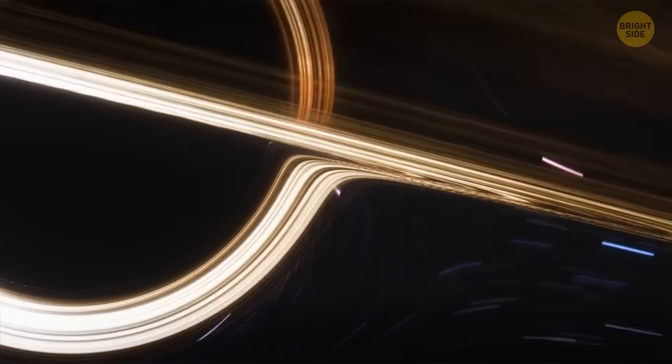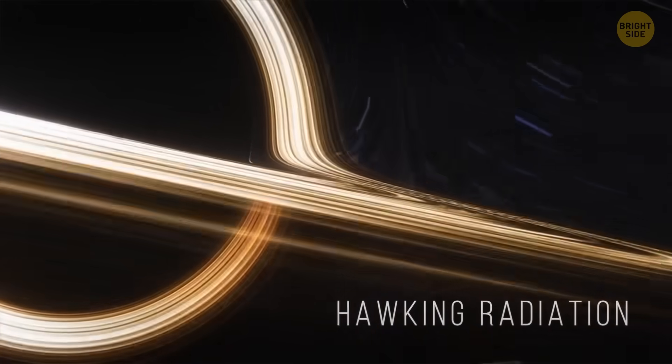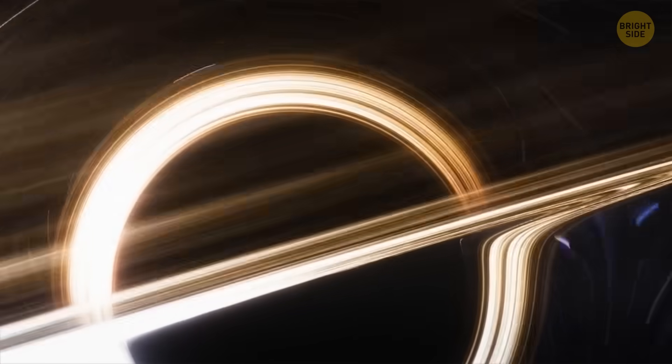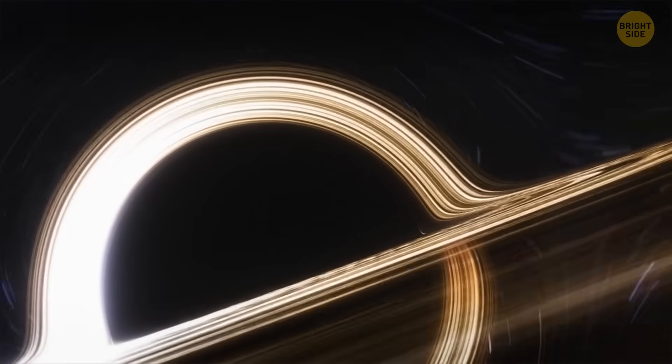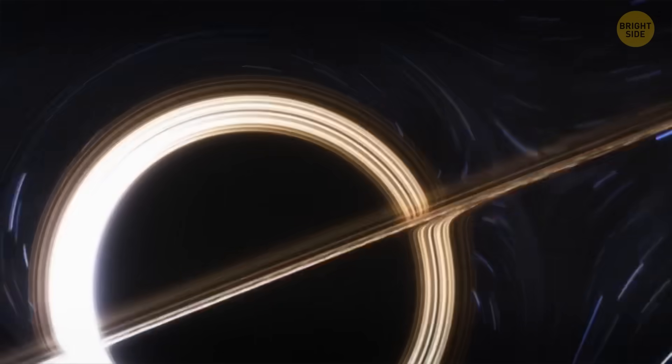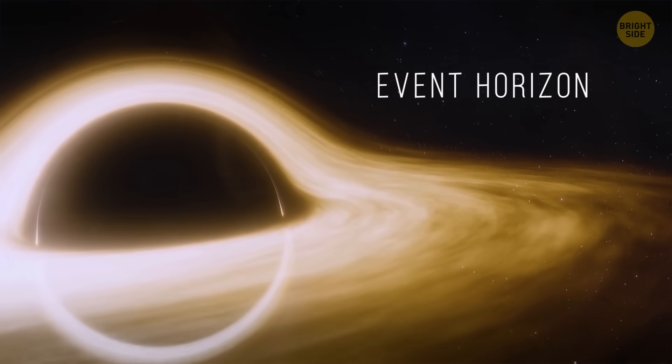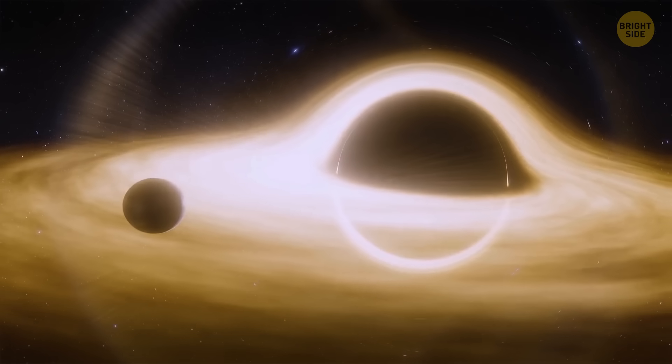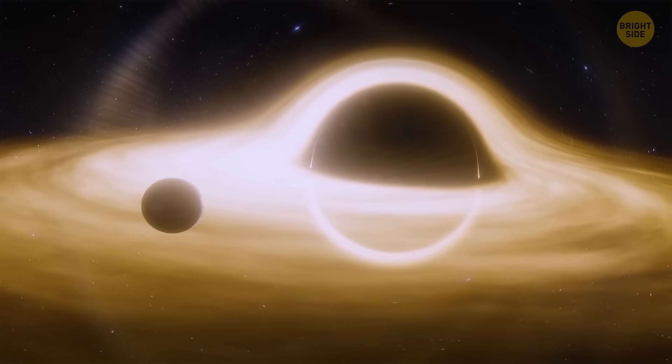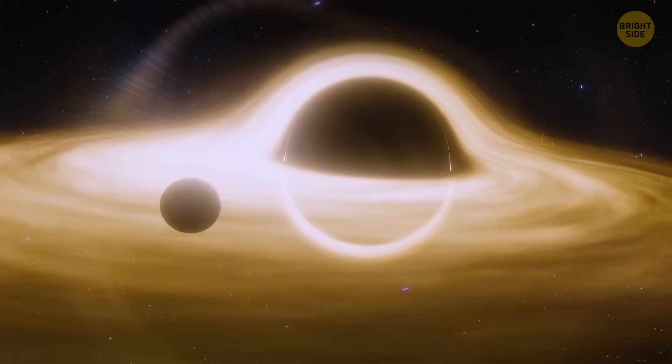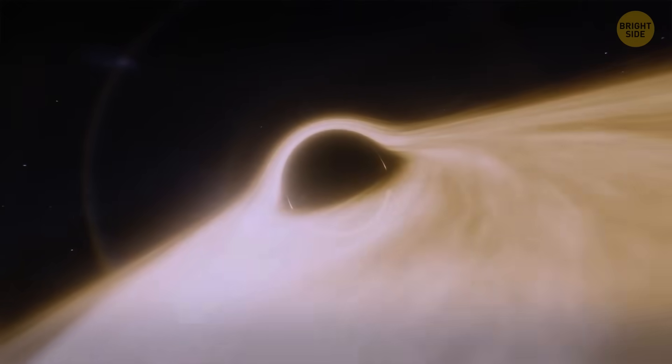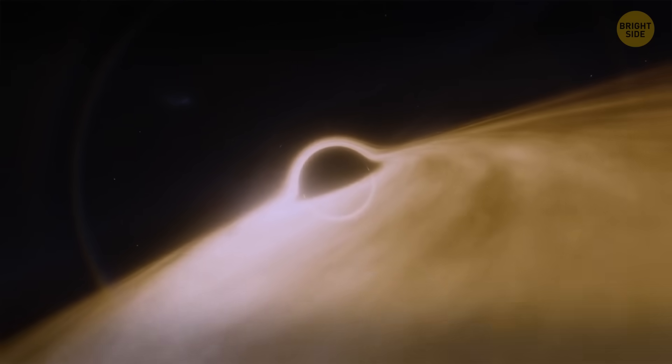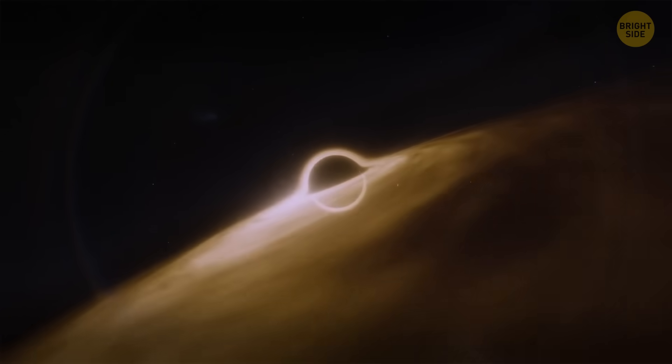Black holes lose their mass because of a thing called Hawking radiation. Their event horizons are becoming smaller. But this process is very, very slow. A black hole's event horizon is a point of no return. It's like a boundary that surrounds a black hole, and nothing, including light and radiation, can escape once it crosses this boundary. The average black hole would need billions of times the age of our universe to disappear completely.